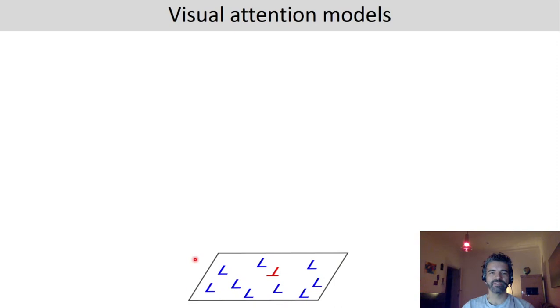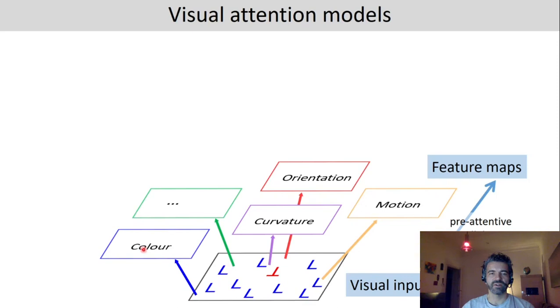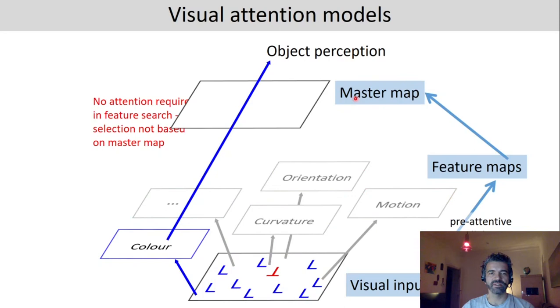So what happens if we have this pop-out scenario where all the distractors are identical and have a different color from the target? Again the distractors and the target are represented on these feature maps but we do not need to access the master map because merely the presence of a single red item already indicates that there is a target. We do not need to take distractors of the same color into consideration and this is why it's faster and in parallel.